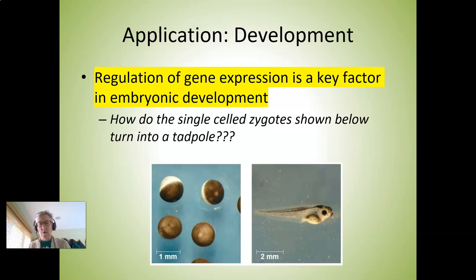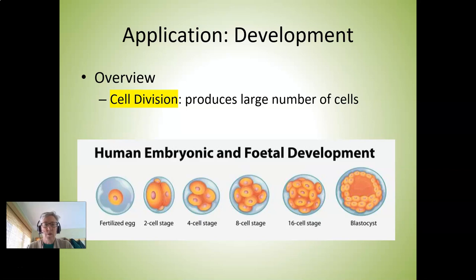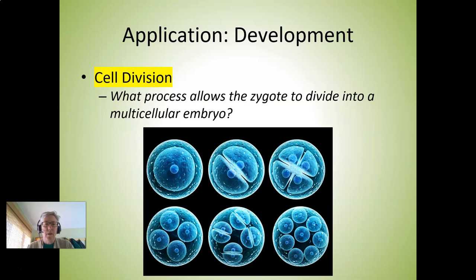The transformation of a zygote into a tadpole needs three things to happen. We need cell division — that's mitosis. Mitosis is what produces a large number of cells: cells divide, you get two, four, eight, and so on.